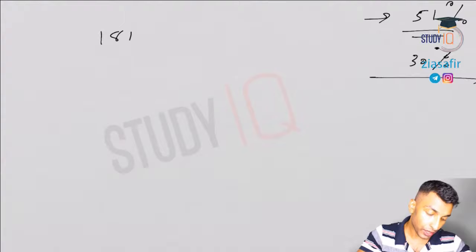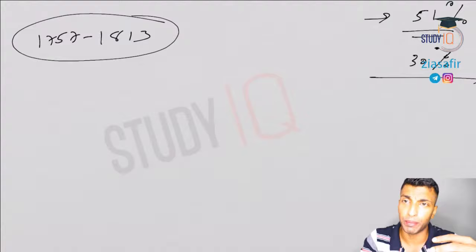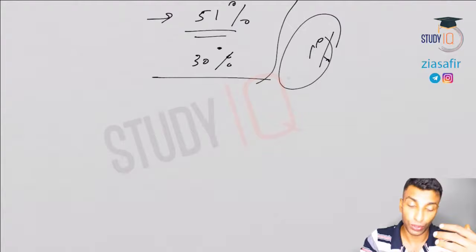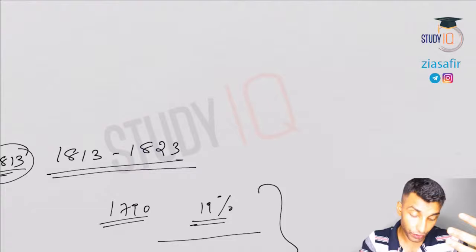So we have reached 1813. In about 10 to 15 minutes I was able to explain 1757 to 1813 in a very simple language. This is the kind of understanding you need to have with respect to history — you can learn history in a mathematical way and you will not forget it.